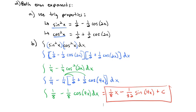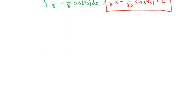To recap sines and cosines: if one of the exponents is odd, we pull one of those out; if they're both even, we use the half-angle trig properties. Now let's look at a second product that takes a bit more decision making — finding the integral of tangent to some exponent of x times secant to some exponent of x dx.